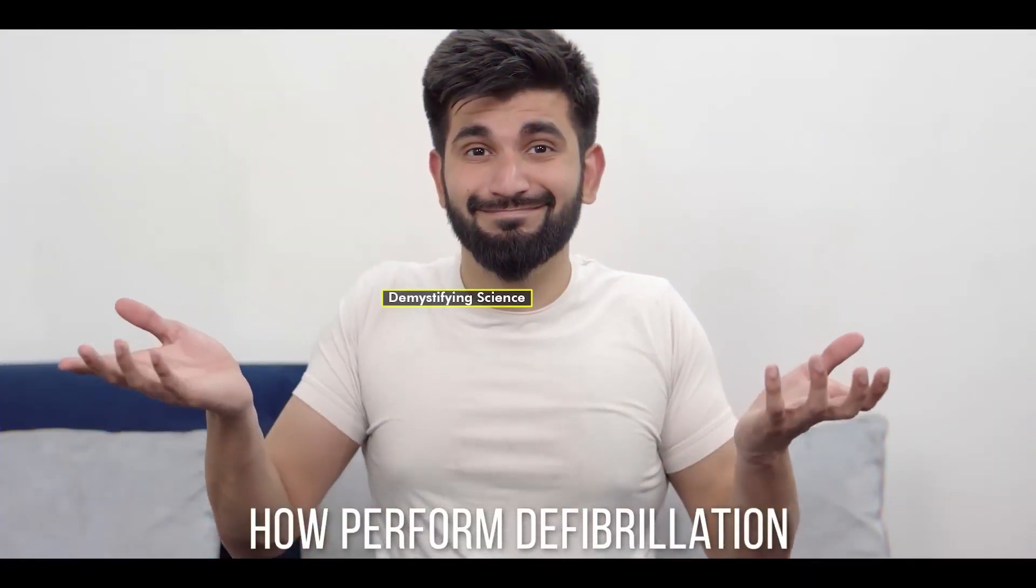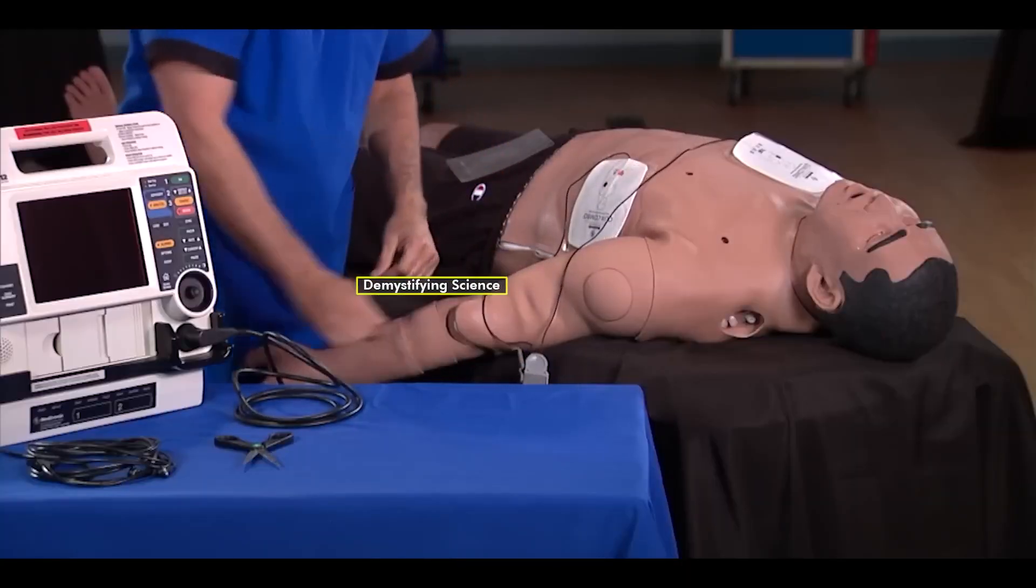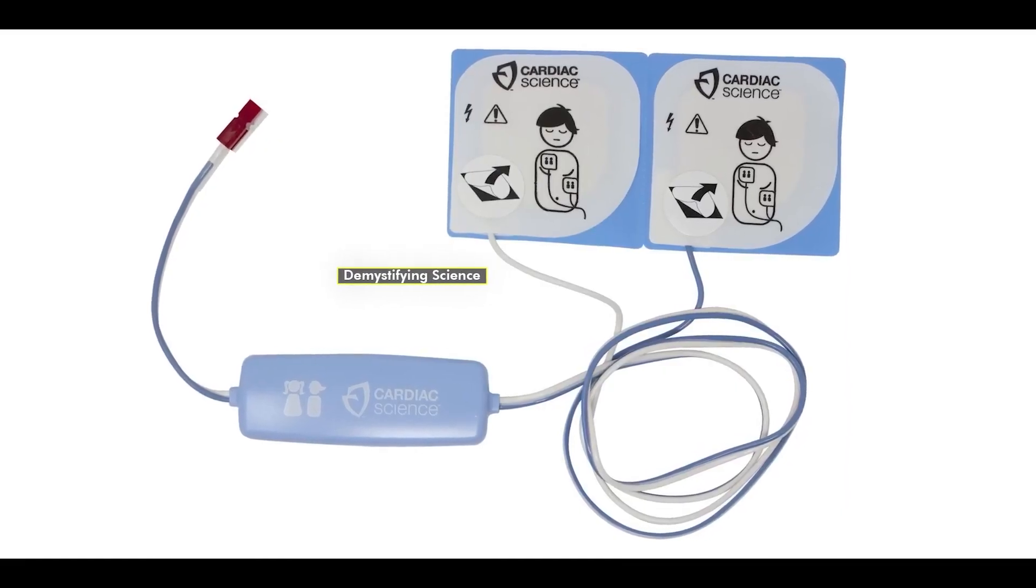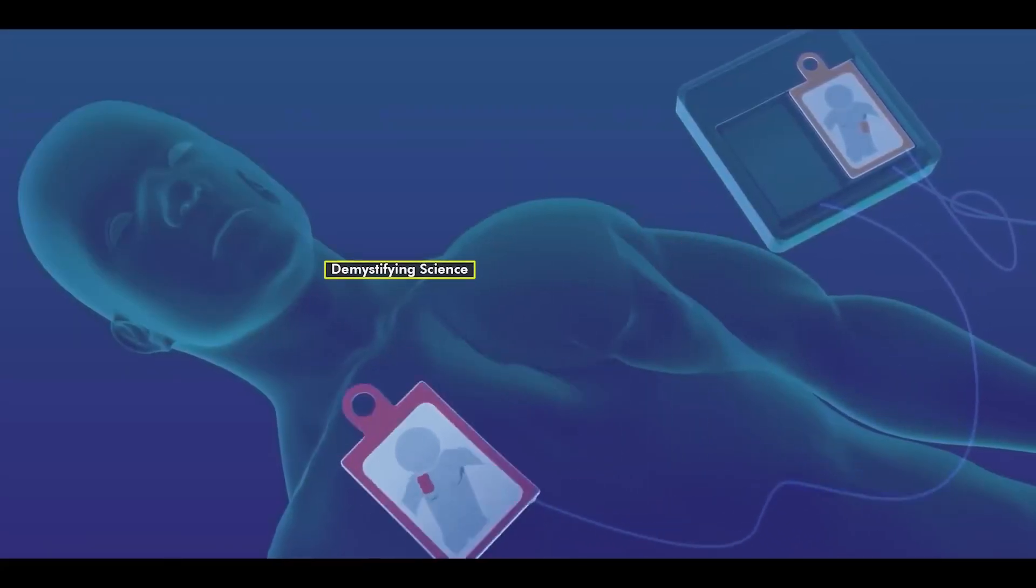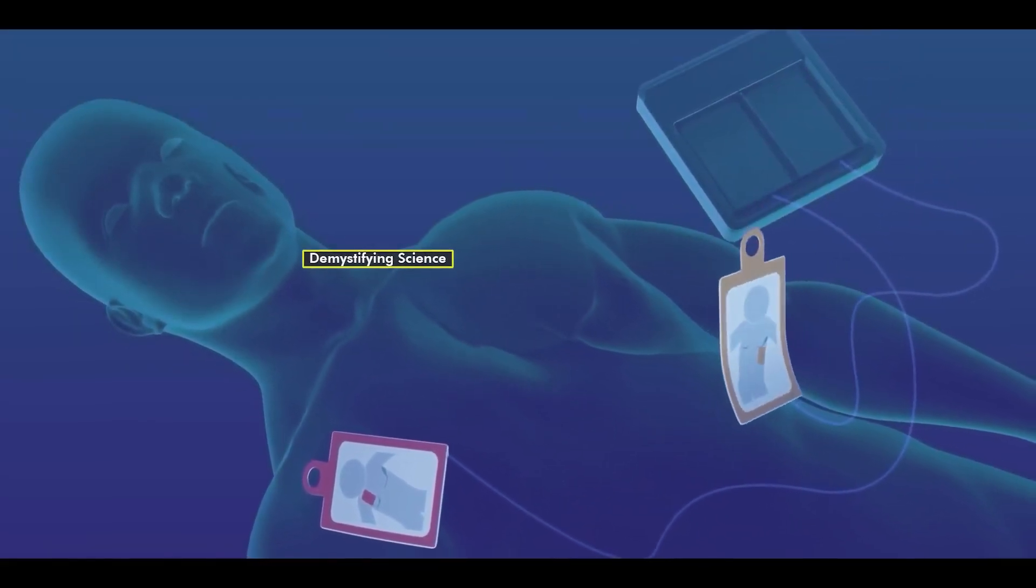How is defibrillation performed? In the presence of a defibrillator, promptly connect the electrodes to the battery and place the electrode pads on the patient's chest so that one is on the upper right chest area and the other on the lower left rib cage.